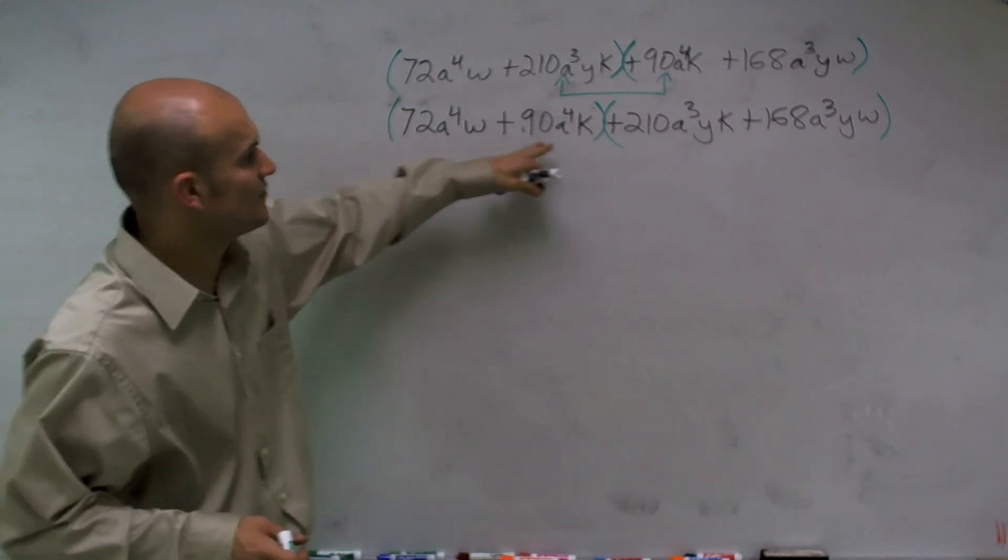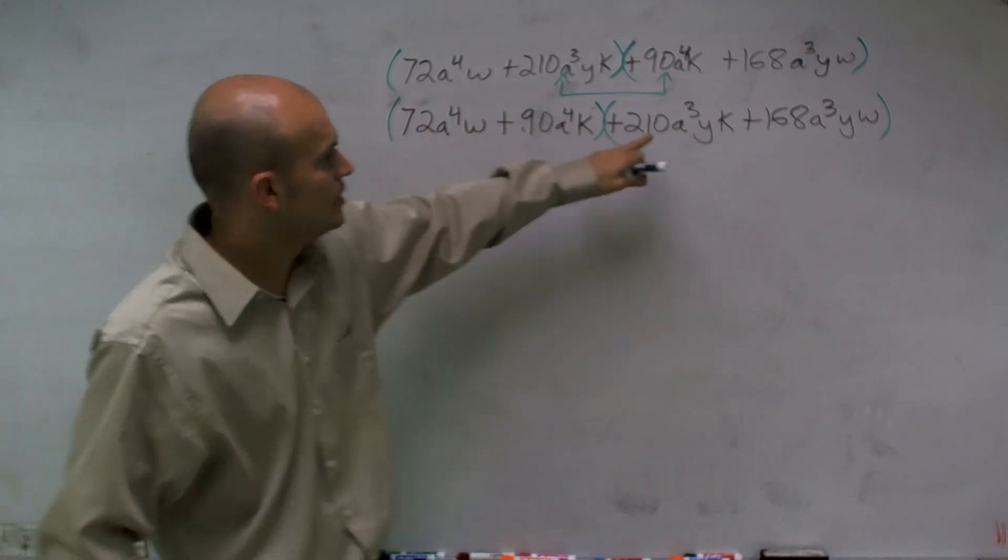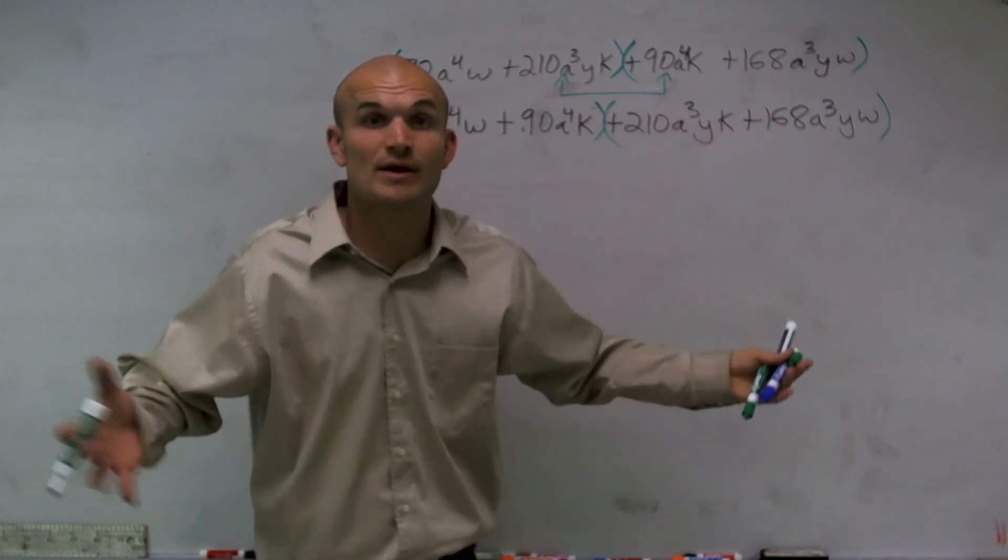So here, if I factor out my a⁴, I'll be left with w + k. Over here, if I factor out an a³y, I'll still be left with k + w, so that works.